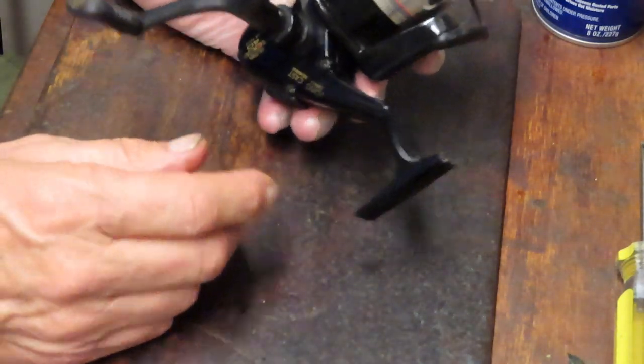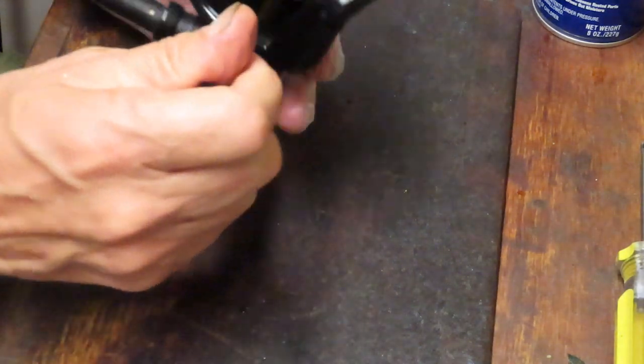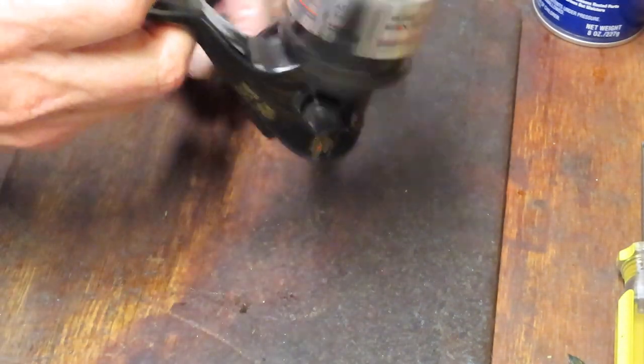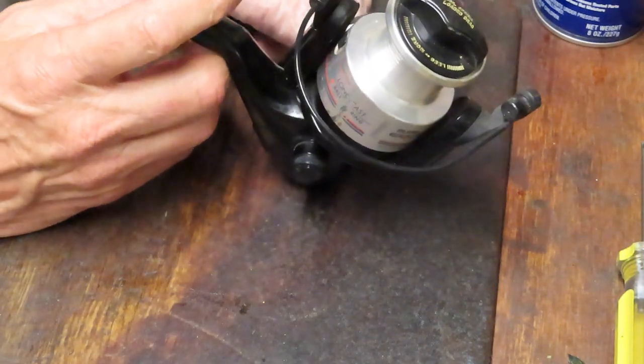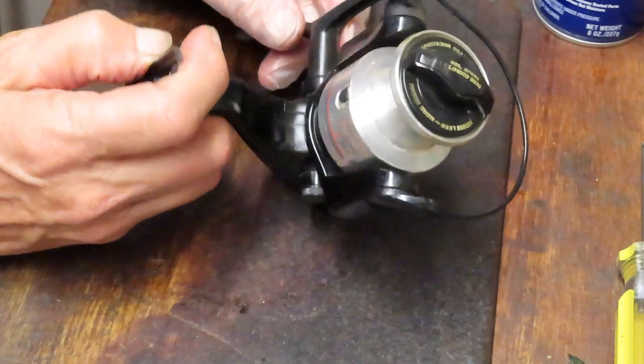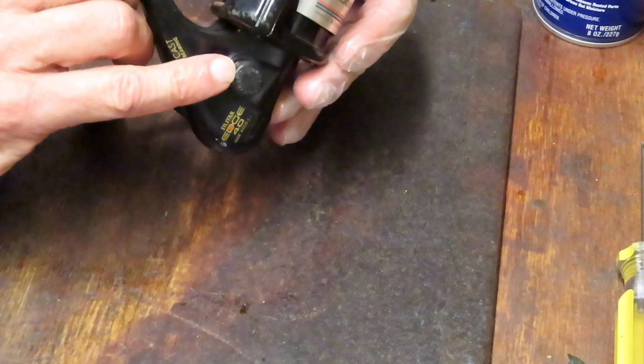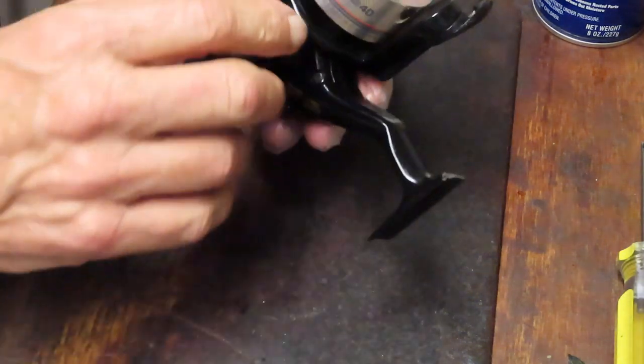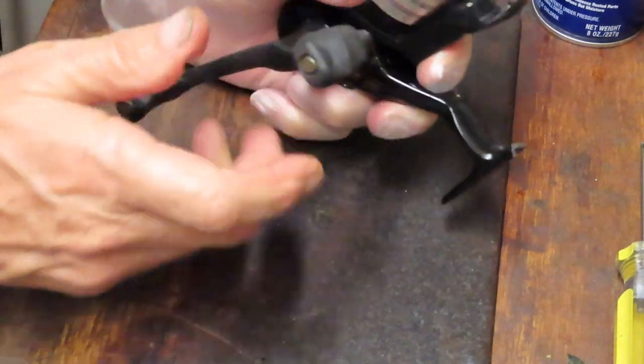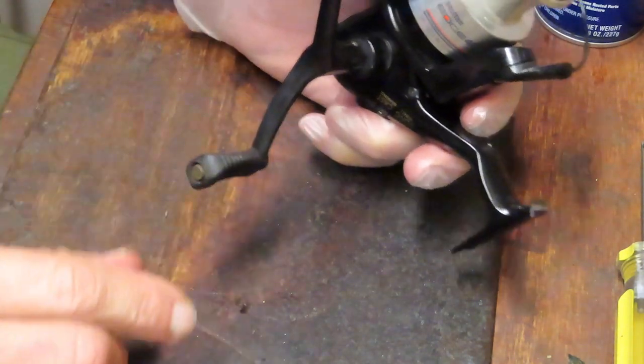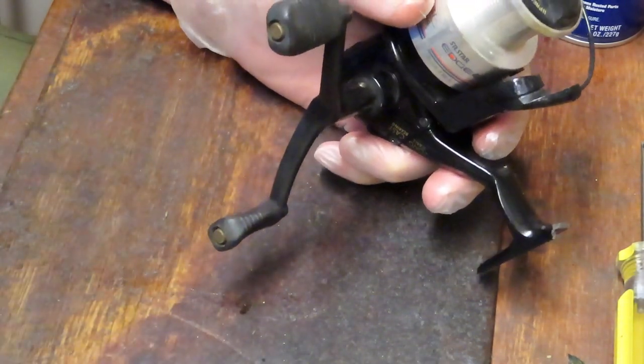So let's get started. Let's show you how this reel is made and how it comes together. I like to do this by taking off the external pieces first. We'll start with the handle, which should be a screw handle. Yep, it's a clockwise rotation to unscrew.